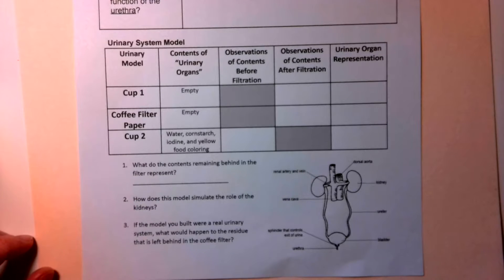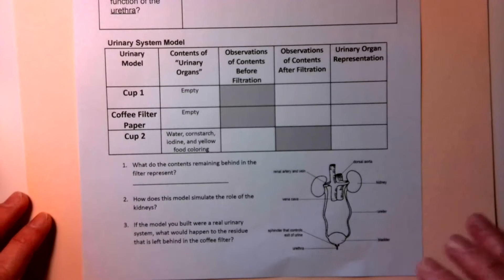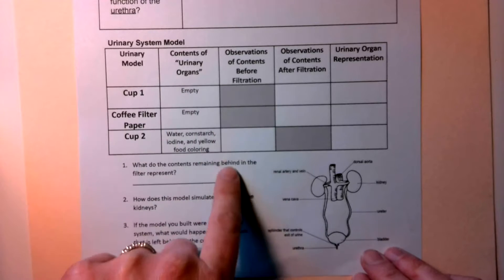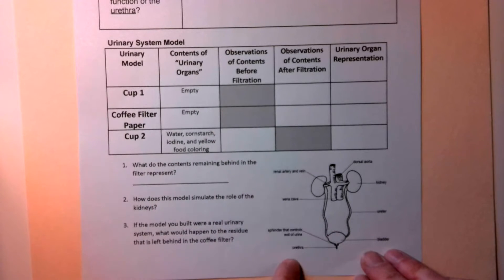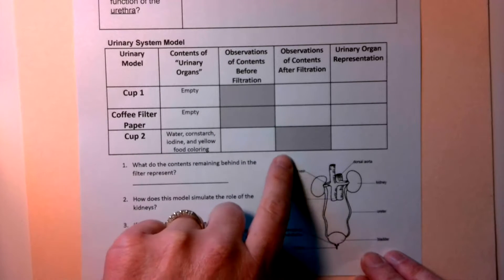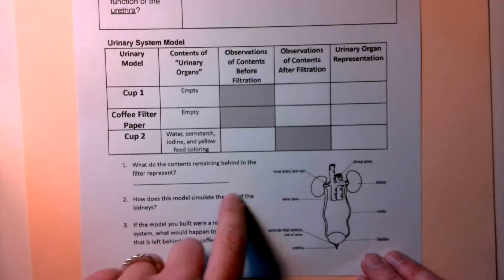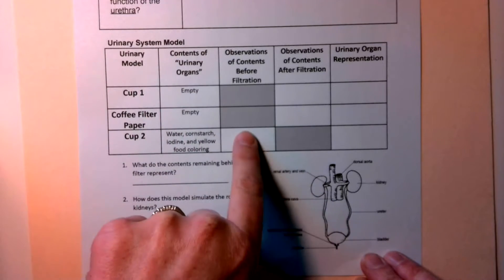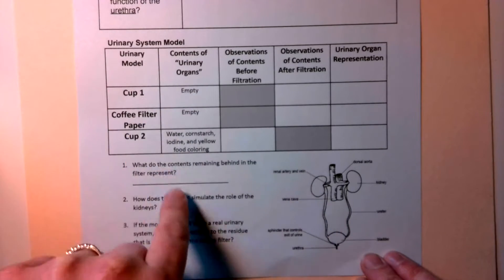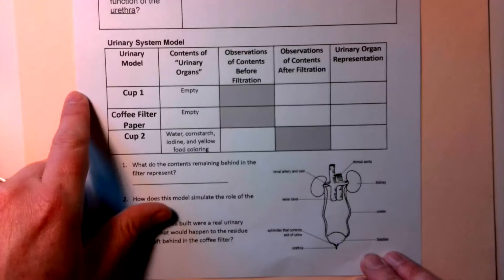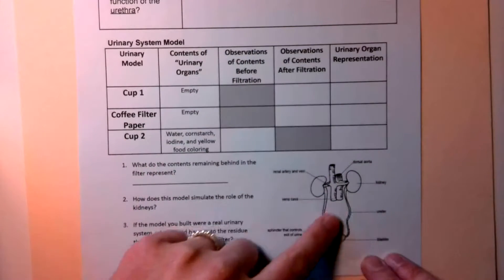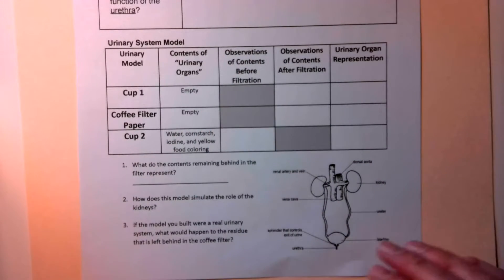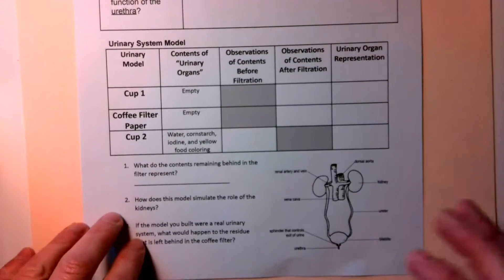Hi students, I hope everybody is doing well. So this is the urinary system model we're going to do together. Normally you would do this in lab groups, but since we can't do it like that, I'm going to show you. You're going to watch and you're going to fill in this information — you'll get the same information as you would in your lab groups. All right, let's get started.